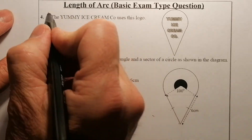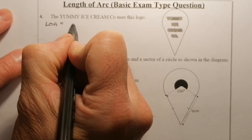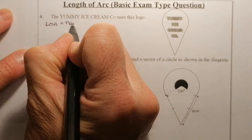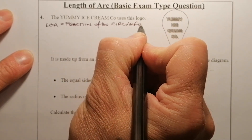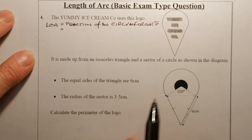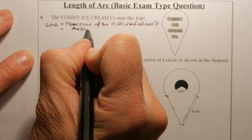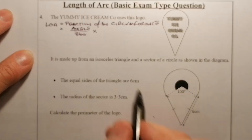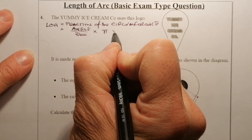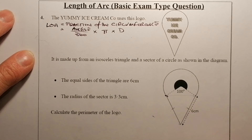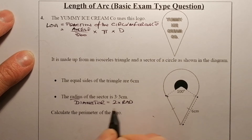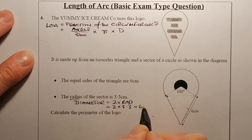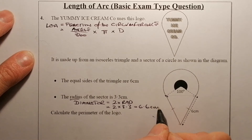Let's work out the length of arc first. The length of arc equals a fraction of the circumference — the angle at the center over 360, multiplied by pi times the diameter. The diameter is important here because we're given the radius. The diameter is two times the radius, which is two times 3.3, giving us 6.6 centimeters.